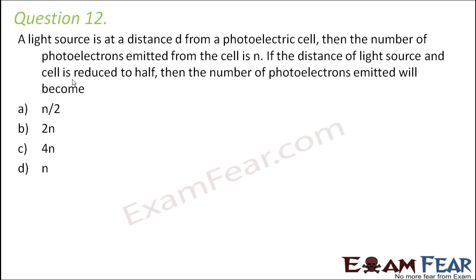When the distance changes — for example, if the light source and the cell are very far apart — the intensity of light falling on the surface will be very less. Basically, intensity is inversely proportional to d squared, where d is the distance between the light source and the cell. So as the distance increases, the intensity of light decreases.